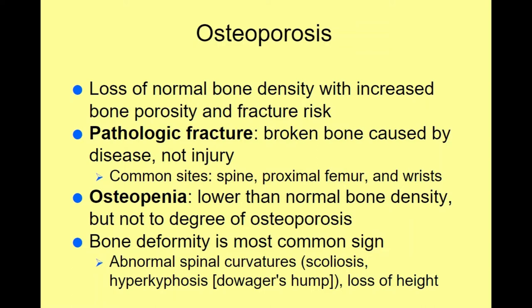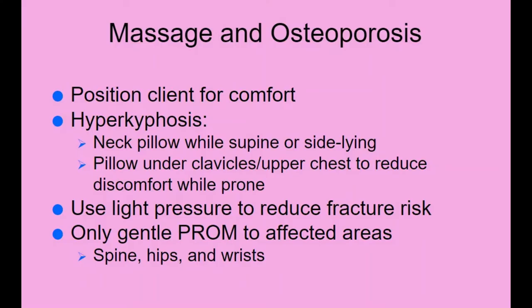Osteoporosis can lead to pathologic fractures — broken bones caused by disease, not injury. Osteopenia refers to lower-than-normal bone density that hasn't yet reached full osteoporosis. Bone deformities such as abnormal spine curvatures (scoliosis, hyperkyphosis/dowager's hump) are common, as is loss of height, particularly in geriatric women but also men.